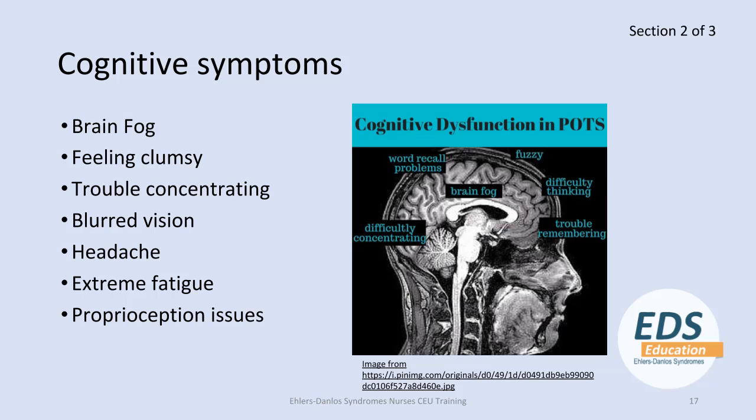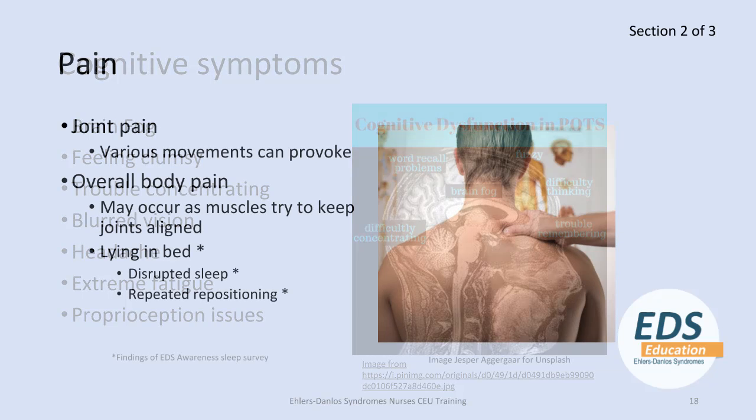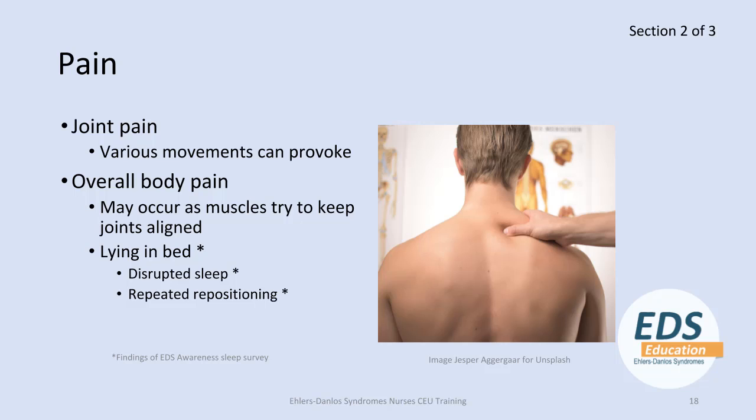A major complaint from patients with EDS is pain. This may be joint pain due to hyperextension and damage to the joints, but it can also be overall body pain. This occurs because the muscles are working very hard to keep the body in good alignment, resulting in a general overall muscle ache, which can affect sleep. Patients can have pain simply when lying in bed, not just from muscle aches but because joints can sublux during sleep. As a nursing measure, you may want to offer extra pillows or whatever they need to maintain proper alignment and decrease pain.